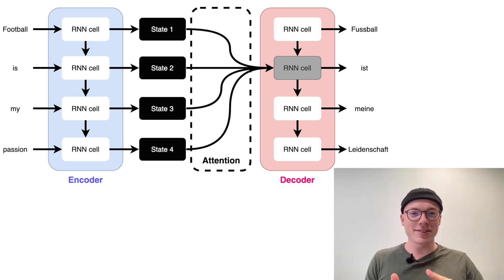Now let's look into the math to really understand how attention works on a low level. We calculate three different things: the alignment score, attention weights, and a context vector. Don't be confused — it's not the same fixed-size context vector as before. Now we're calculating a context vector for each decoder cell, while before we had one context vector for all decoder cells. The alignment scores give us information about how relevant a certain input token is to the particular word we'd like to translate right now.